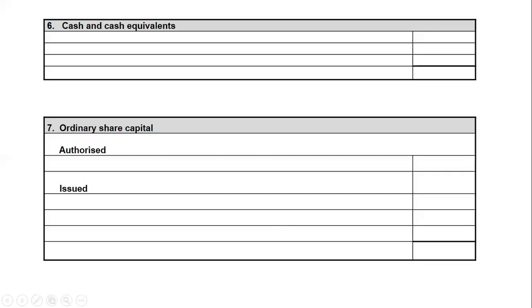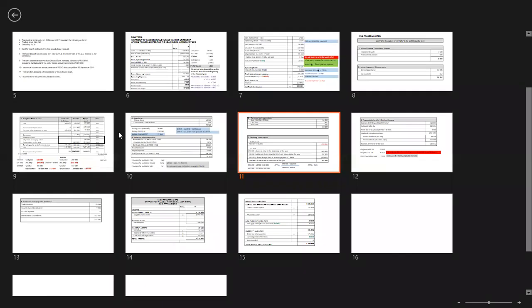In my ordinary share capital note, I'll start with authorized shares. The number of authorized shares is 250,000. Note that this is not a rand value — it represents the maximum number of shares that a company may issue.